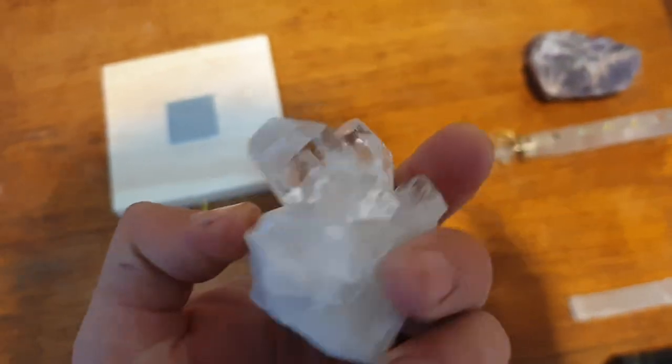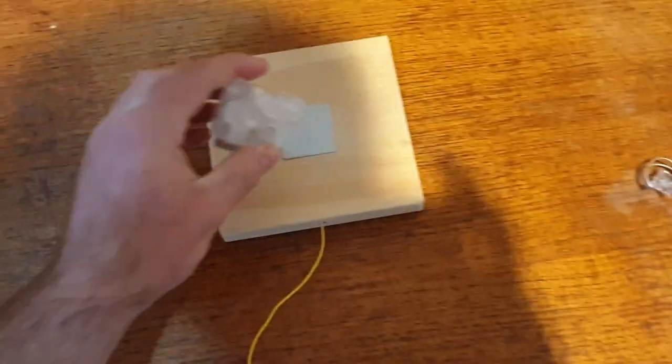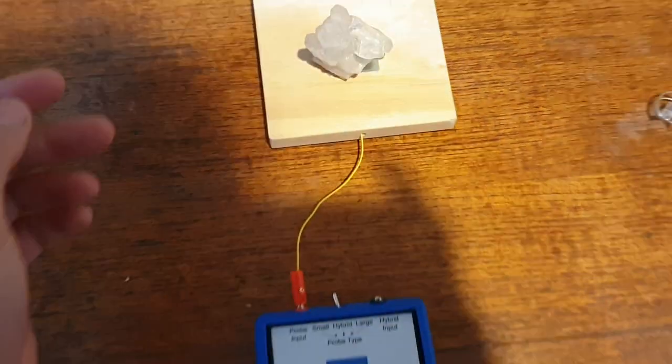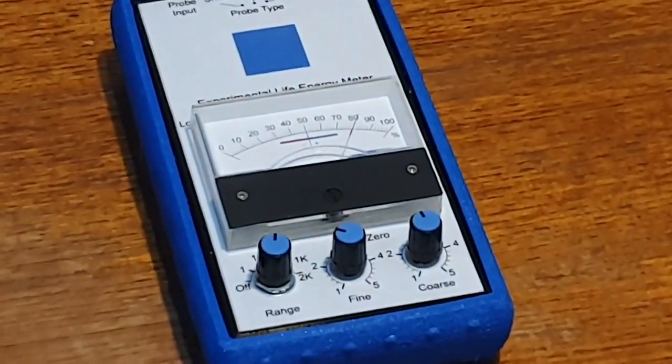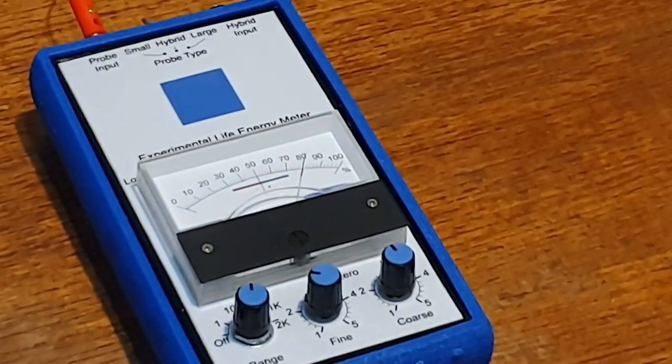So this is just a nice piece of quartz that I have. So we're going to place that directly on there. Step back. Now you start to get into the measurements where we can actually see the differences. So what does that say? That's around 80. Bang on 80.